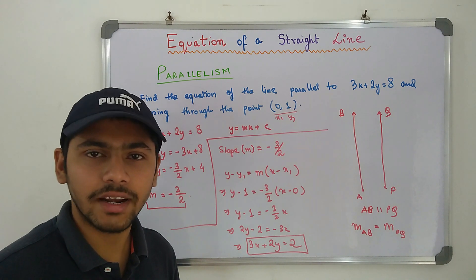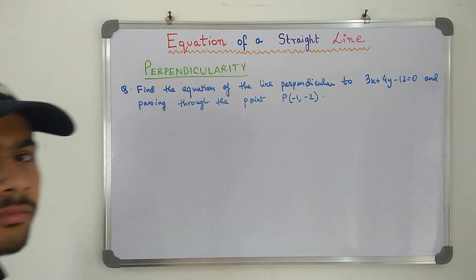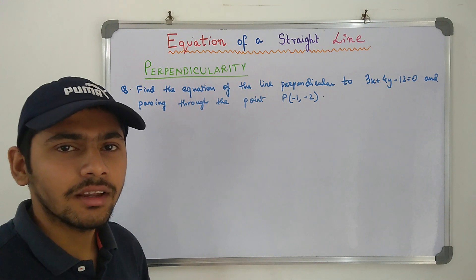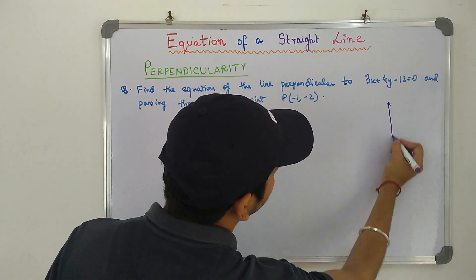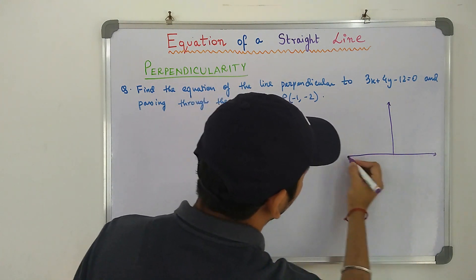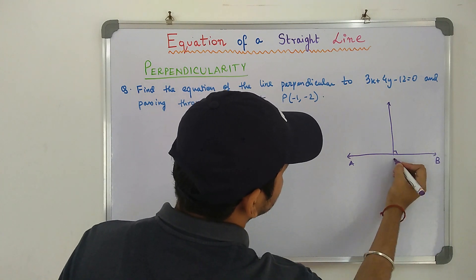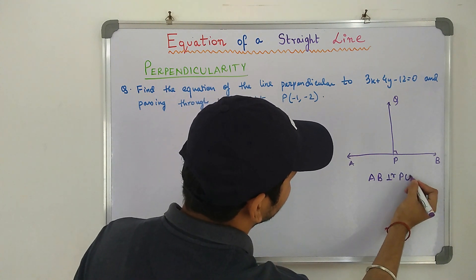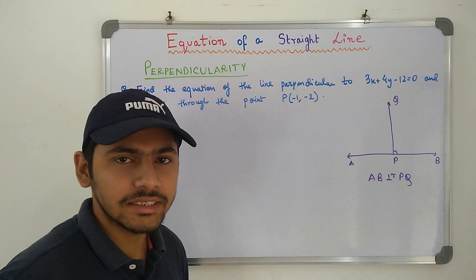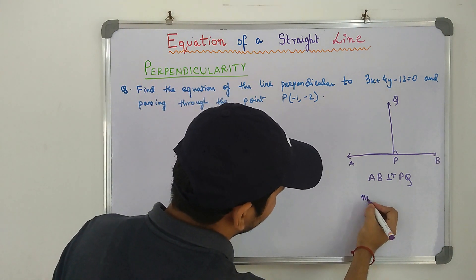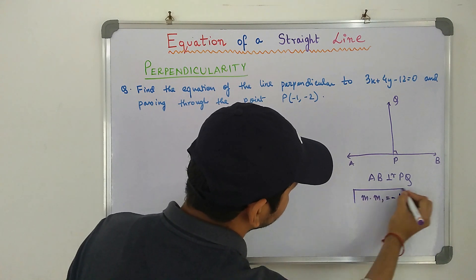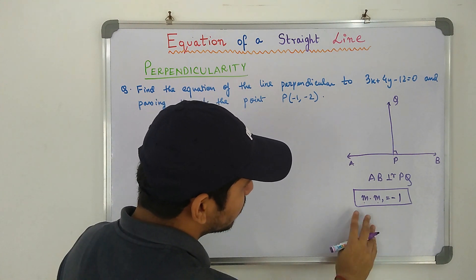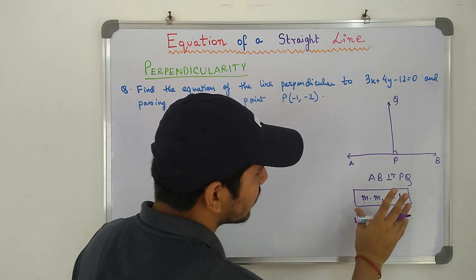Moving on to Perpendicularity. If two lines are perpendicular to each other — take line AB perpendicular to line PQ — the slopes satisfy the relation M × M1 = −1. That means the product of the slopes of line AB and line PQ will equal −1.